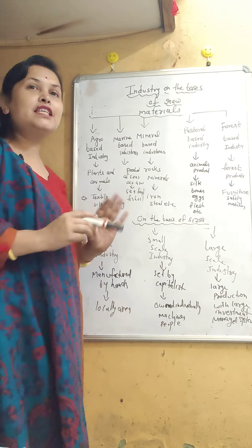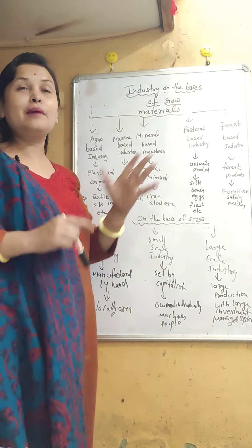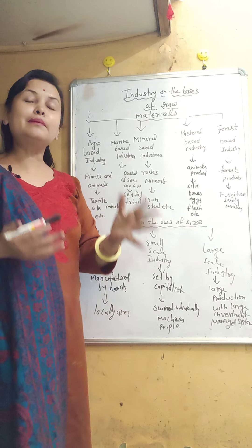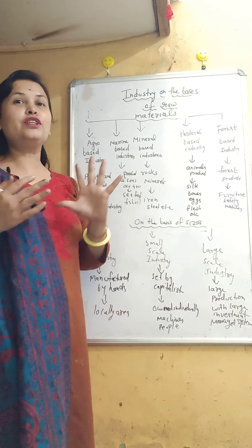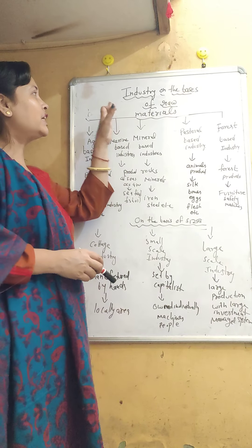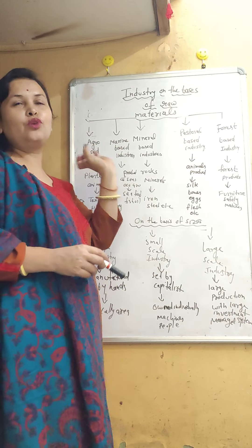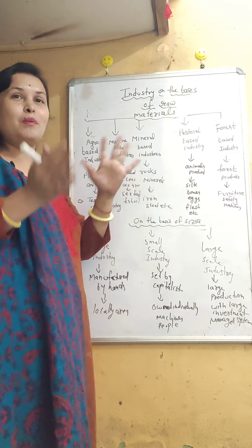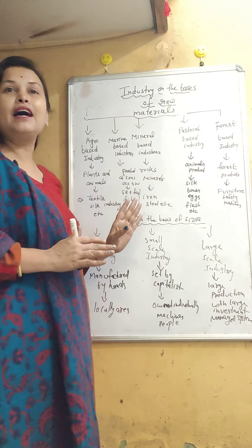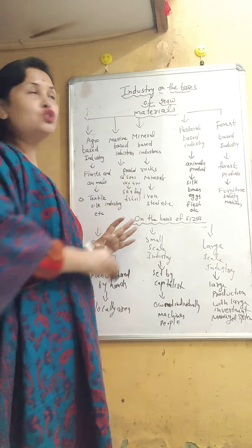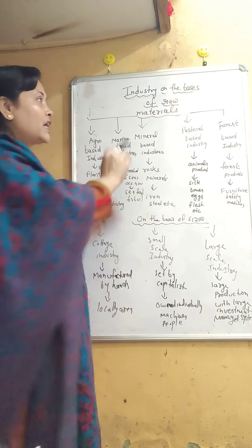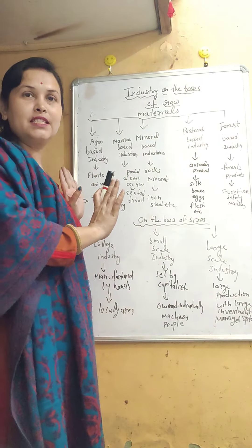Industries — you know, we need raw materials, then we can cook some food, then we can prepare some dishes, so that industry will be prepared when we manufacture raw materials. On the basis of different availability of raw materials, there are 5 types of industries.